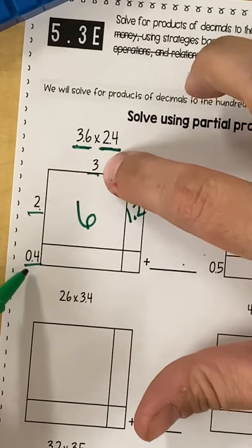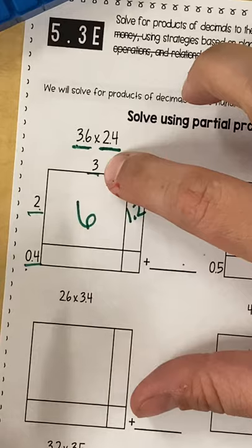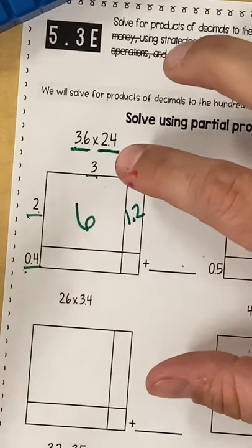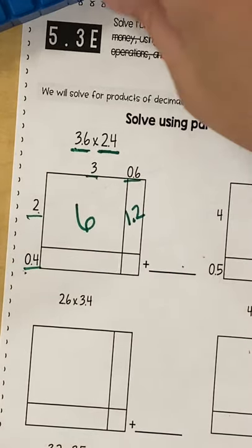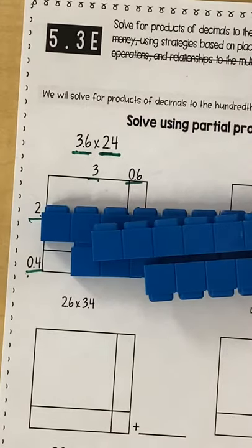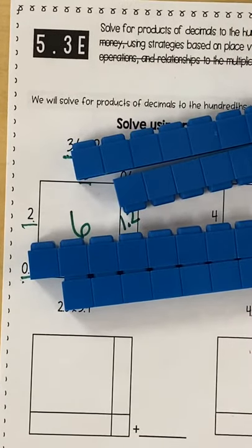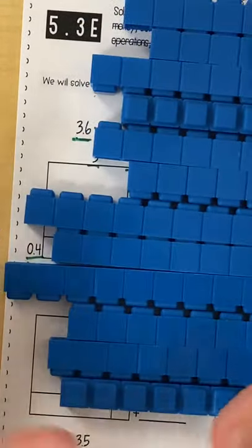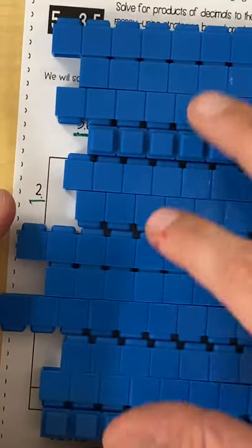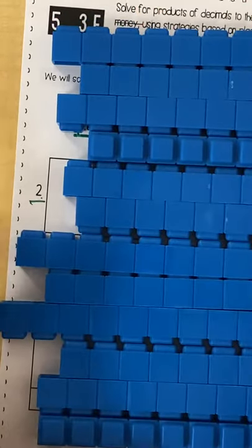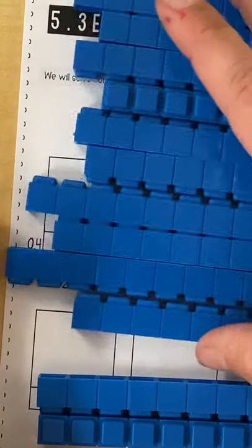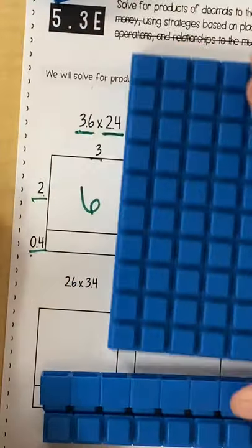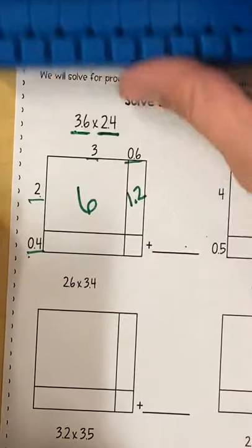Next, I have 3 times 4 tenths and the same thing applies. That would be like taking 4 tenths and multiplying it 3 times. So 1, 2, 3, 4 three times. I have 4 plus 4 plus 4, which is 12 tenths. I can take that and regroup 10 of those into 1 whole and have 1 and 2 tenths.